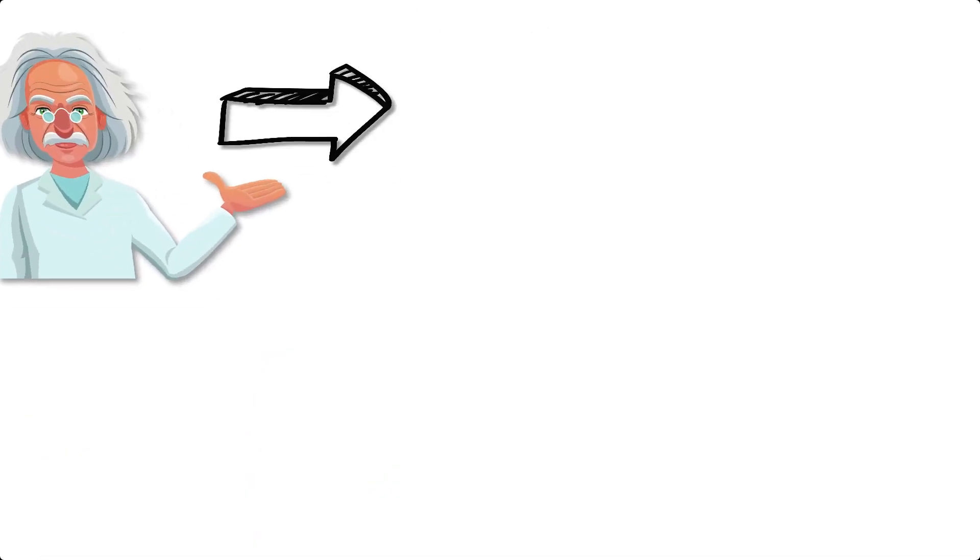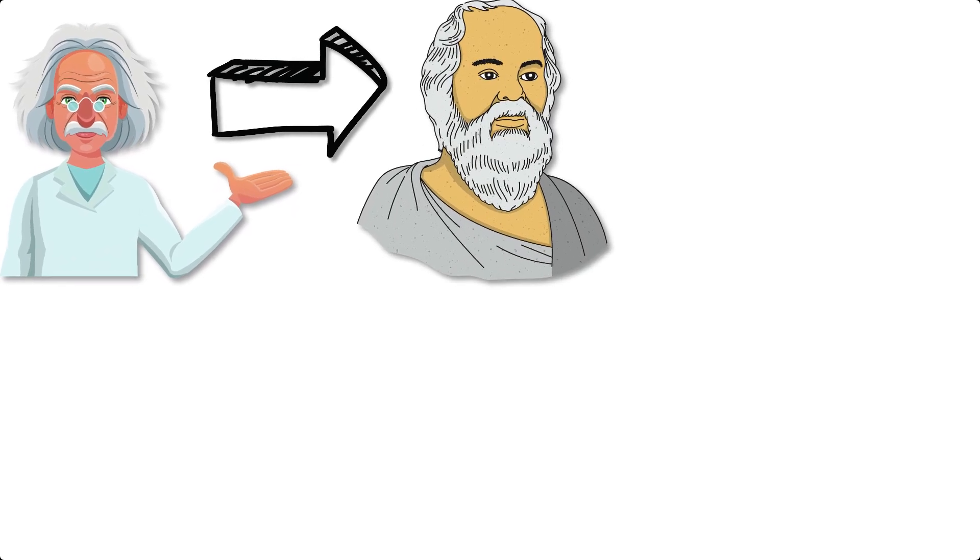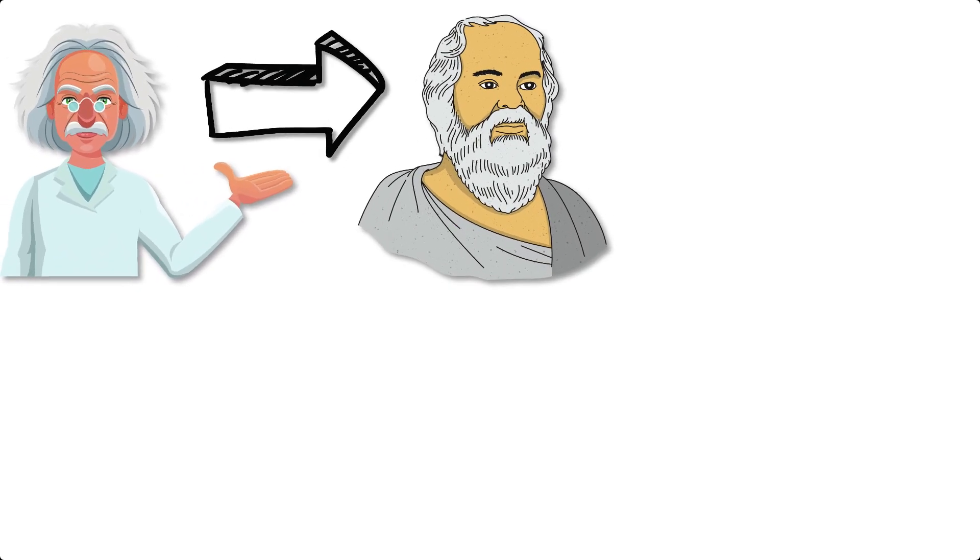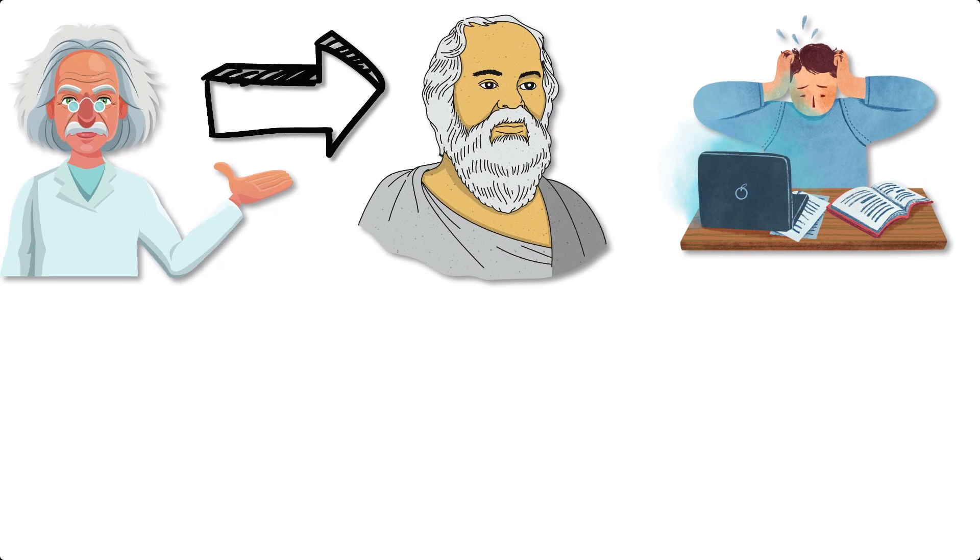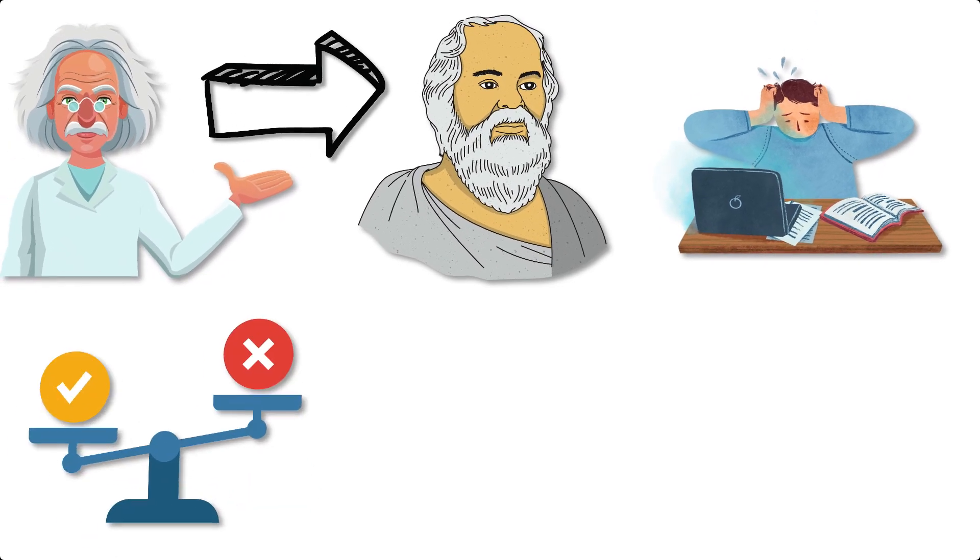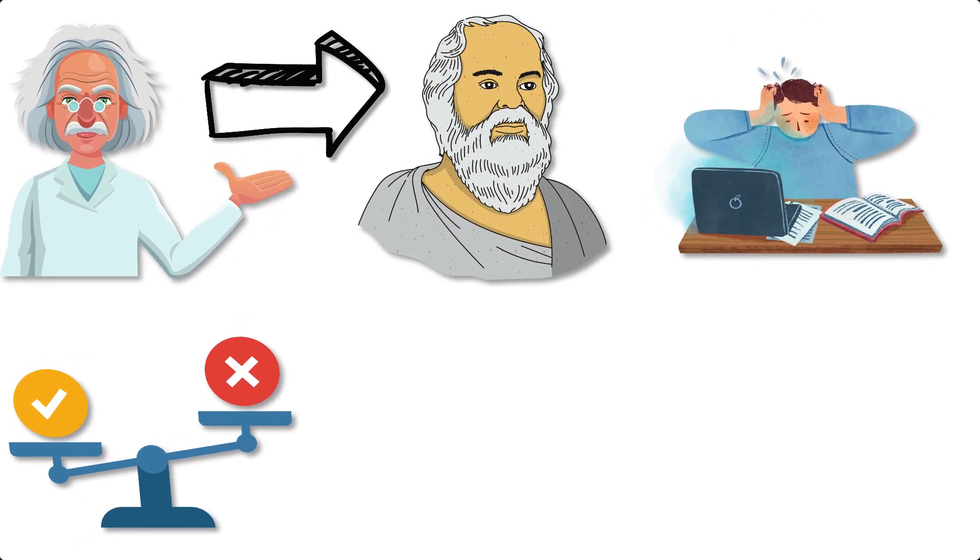Shifting from the scientific to the philosophical realm, Sapolsky explores the implications of accepting the lack of free will. He addresses concerns about moral responsibility, suggesting that a deterministic view does not excuse harmful actions but rather shifts the focus to prevention and rehabilitation.